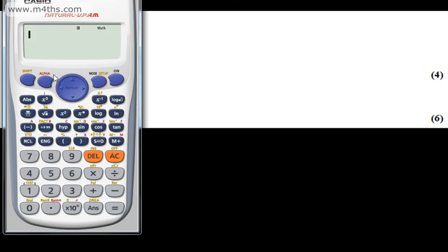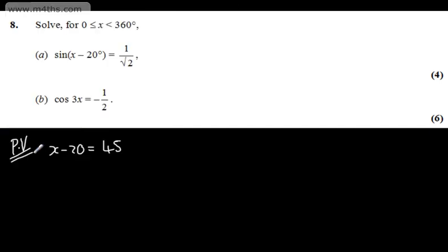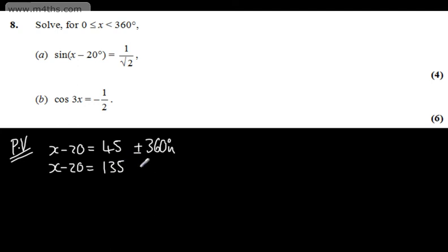If you're unsure, check your degrees mode and take the inverse sine of 1 over root 2, or root 2 over 2 — that gives us 45 degrees. We then have plus or minus multiples of 360 degrees. By symmetry, x minus 20 will also equal 180 minus 45, which gives 135, plus or minus multiples of 360 degrees.